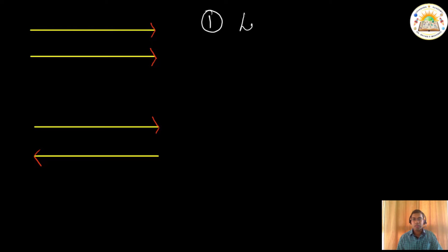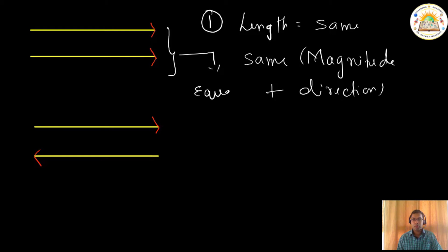In case one, if we see, both have the same length. That means, the magnitude is the same. I can simply write it as same magnitude plus same direction. This makes these two vectors equal vectors. Because both are in the same direction, both have the same length. If we go ahead and have a look, we can even call these as parallel vectors. Why? They are parallel to each other, and they are in the same direction.